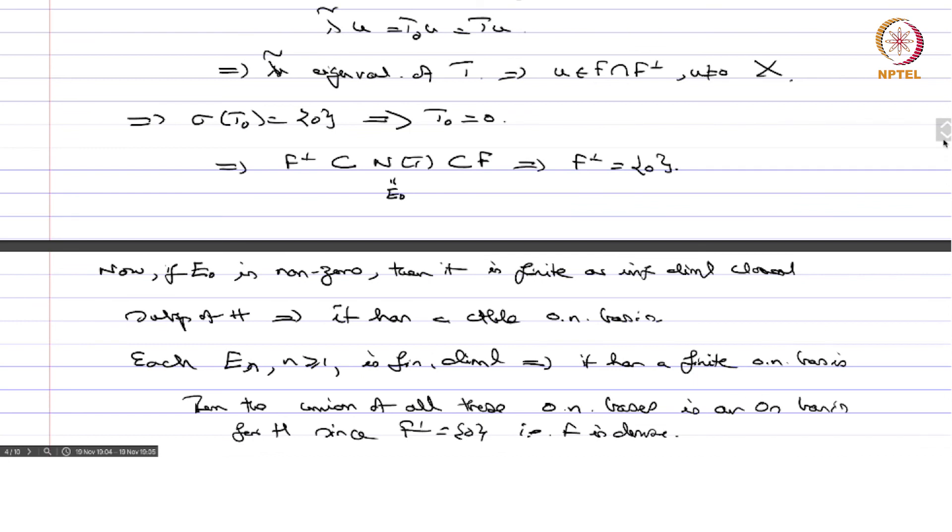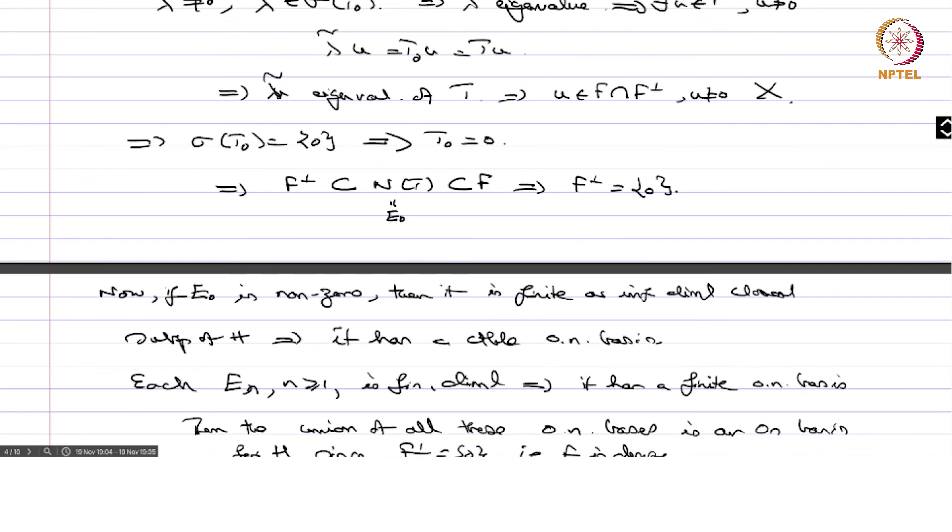Because the union is orthonormal is clear. If x is orthogonal to all of these basis vectors, then x is orthogonal to the space F and then we saw that F perp is 0 since F is dense and therefore it is a basis. This proves that you have an orthonormal basis for H. Next we will look at a variational characterization of the eigenvalues.